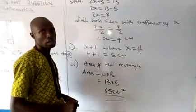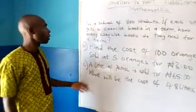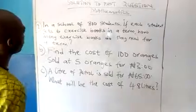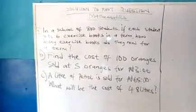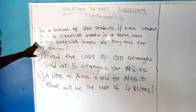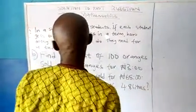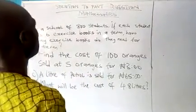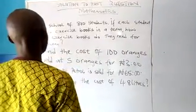Then we will now go to the next question. Let's go to number 2 question. Question number 2, part A is, in a school of 800 students, if each student gets 6 exercise books in a term, how many exercise books do they need for a term?